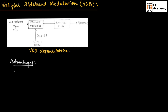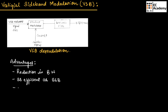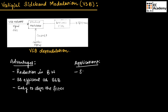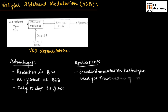The advantages of VSB modulation include a reduction in bandwidth, it is as efficient as single sideband modulation, and it is very easy to design the filter. The VSB modulation is the standard modulation technique used for transmission of TV signals.